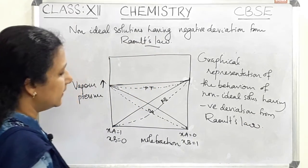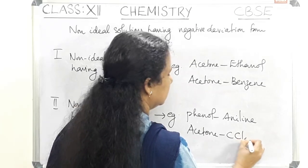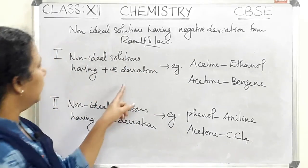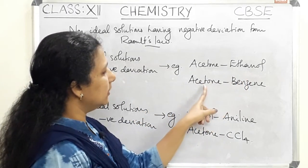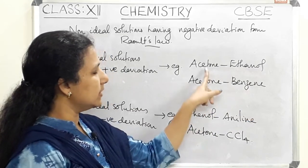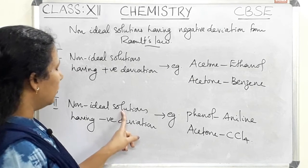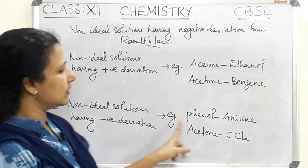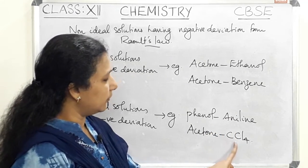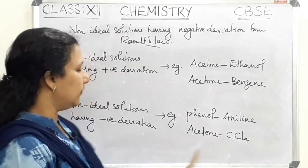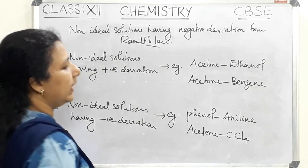Now let us see some examples of non-ideal solutions. Non-ideal solutions having positive deviation include acetone-ethanol solution and acetone-benzene solution — these two show positive deviation from Raoult's law. Non-ideal solutions having negative deviation from Raoult's law include phenol-aniline and acetone-CCl4. These are two sets of solutions showing negative deviation from Raoult's law. So this is about non-ideal solutions.